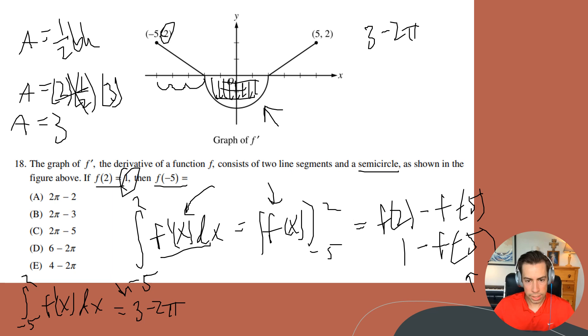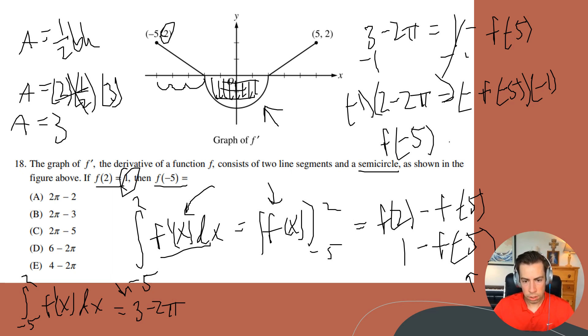Three minus two π, and set that equal to one minus f of negative five. So if I subtract one from both sides, I will end up with two minus two π equals negative f of negative five. And then I'll go ahead and multiply both sides by negative one, so when I do that I have f of negative five equals two π minus two. And that is going to be answer choice A, and that is in fact the correct answer.